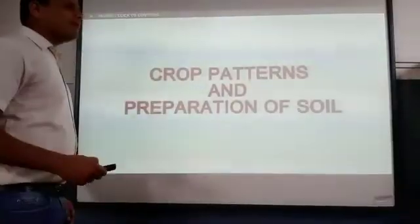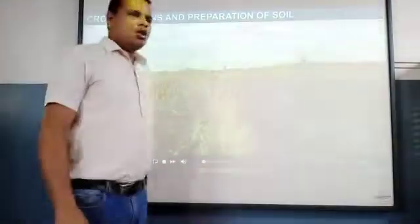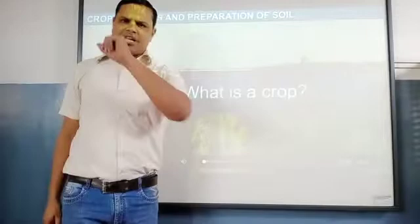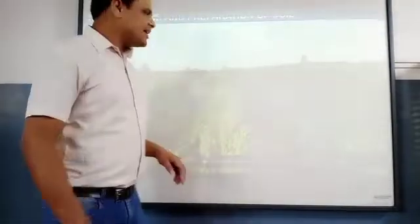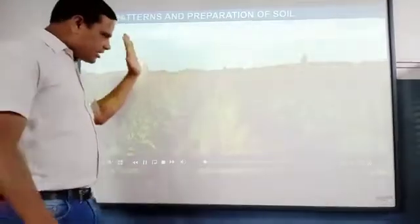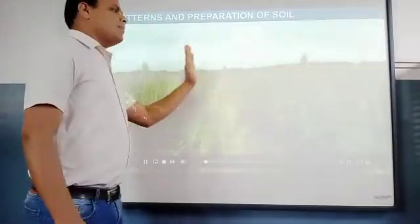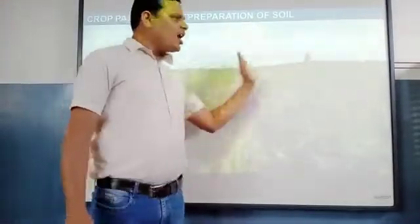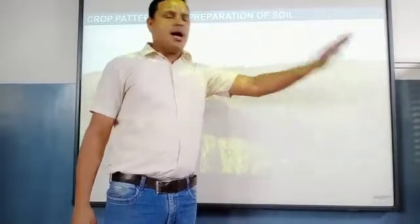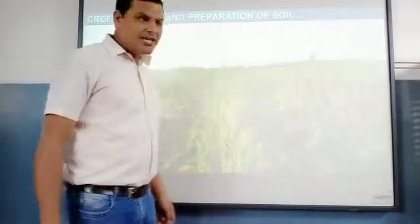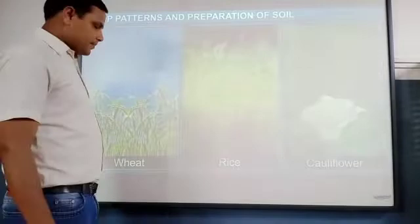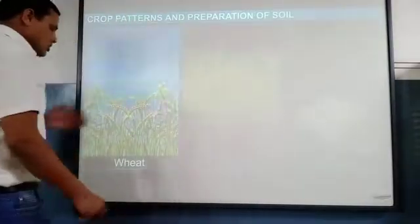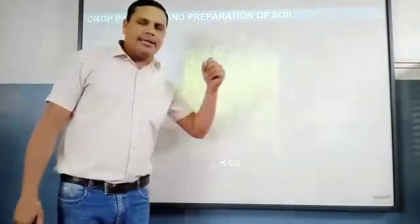The first question that arises is: what is a crop? A same kind of plant grown in a large vast area is known as a crop. Many crops we can grow — just like wheat, rice, and cauliflower.